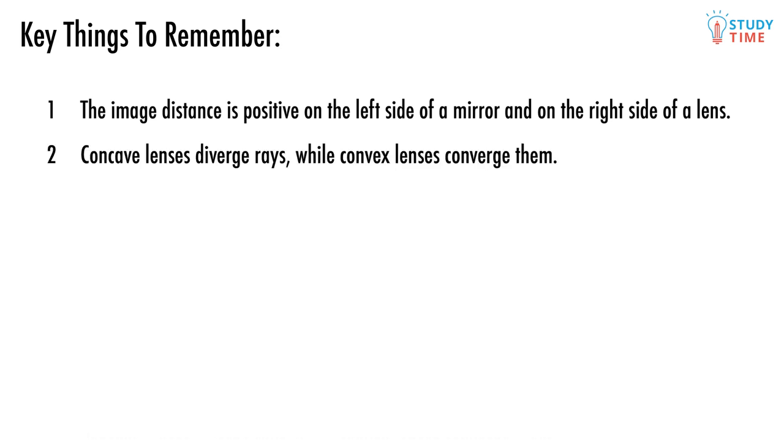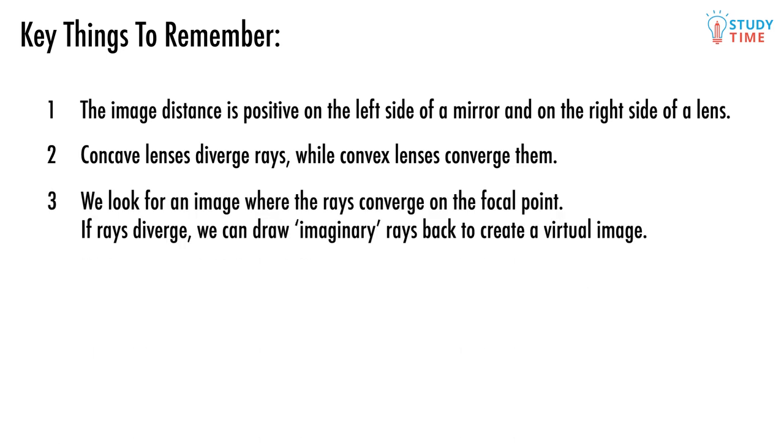Concave lenses diverge rays while convex lenses converge them. We look for an image where the rays converge on the focal point. If rays diverge, we can draw imaginary rays back to create a virtual image.